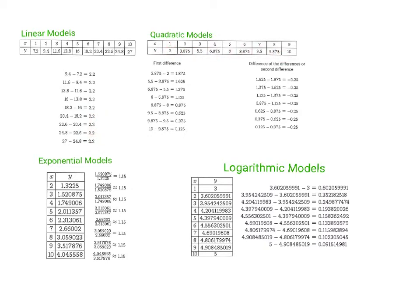If it's quadratic, the first difference is going to be different, so it's not linear. But if you go and subtract the second difference — taking the second difference minus the first, the third difference minus the second — that difference ends up being all the same. So if you do it once and it's the same, it's linear. Do it twice and it's the same, it's quadratic.